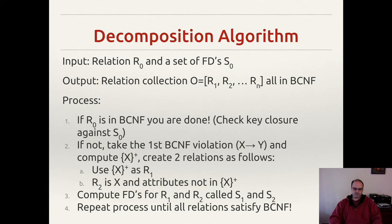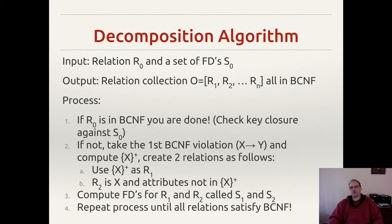In this example, there's actually going to end up being three decomposed relations that are going to be derived from what we give in relation R0, which is going to be the entire relation before we break it apart. These relations that we output as O are also going to be in Boyce-Codd normal form — all of them. That is the goal here.